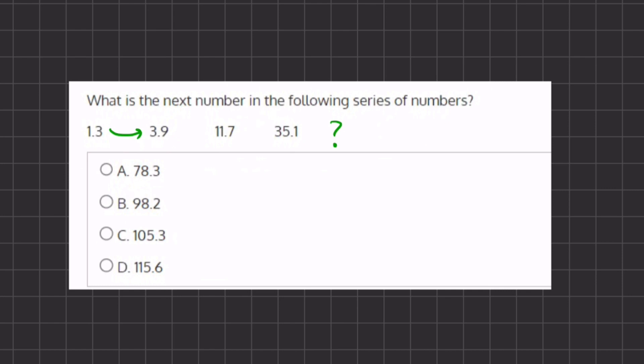Going from 1.3 to 3.9, we are multiplying by 3. Now you can tell this by checking the number, the whole number, and the decimal. If we multiply the 1 by 3, we get 3. And if we multiply the 0.3 times 3, we get 0.9,